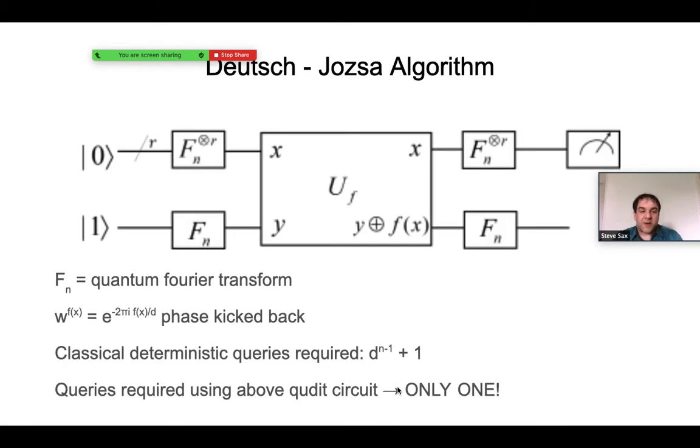Now let's conclude by looking at an actual circuit using Qudit gates, and we'll look at the Deutsch-Jozsa algorithm. Although this is analogous to the circuit as it would be in a qubit system, note that instead of having Hadamard gates, we have quantum Fourier transform gates. Also note that the phase that's kicked back, which is essential to the operation of the circuit, is e to the minus 2πi f(x) over D.